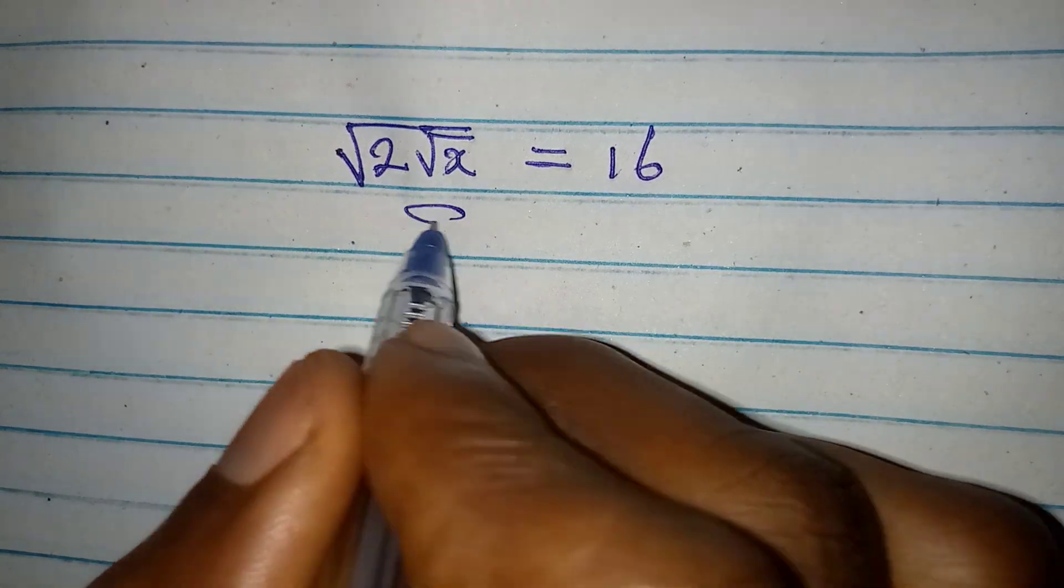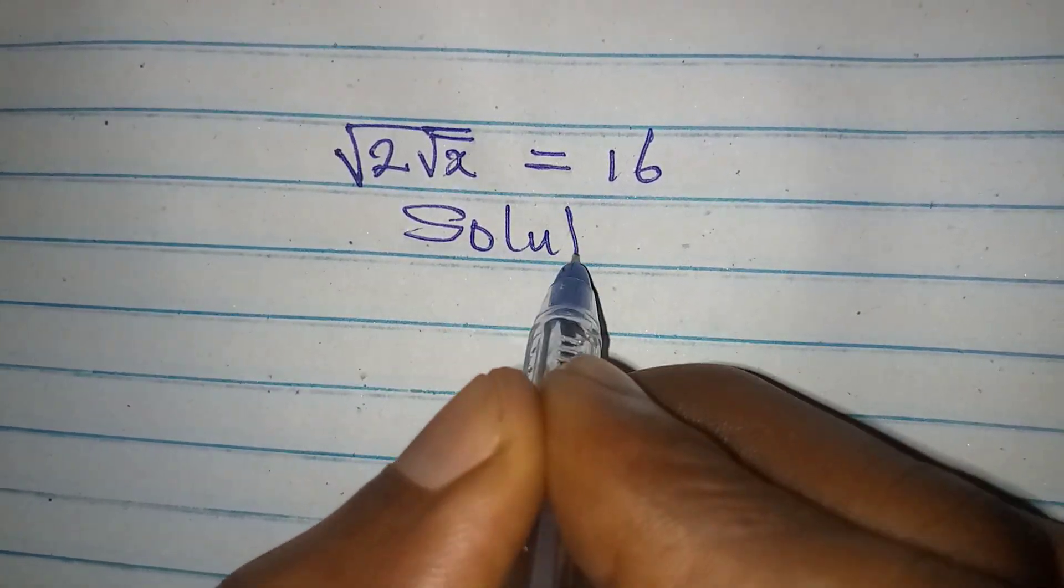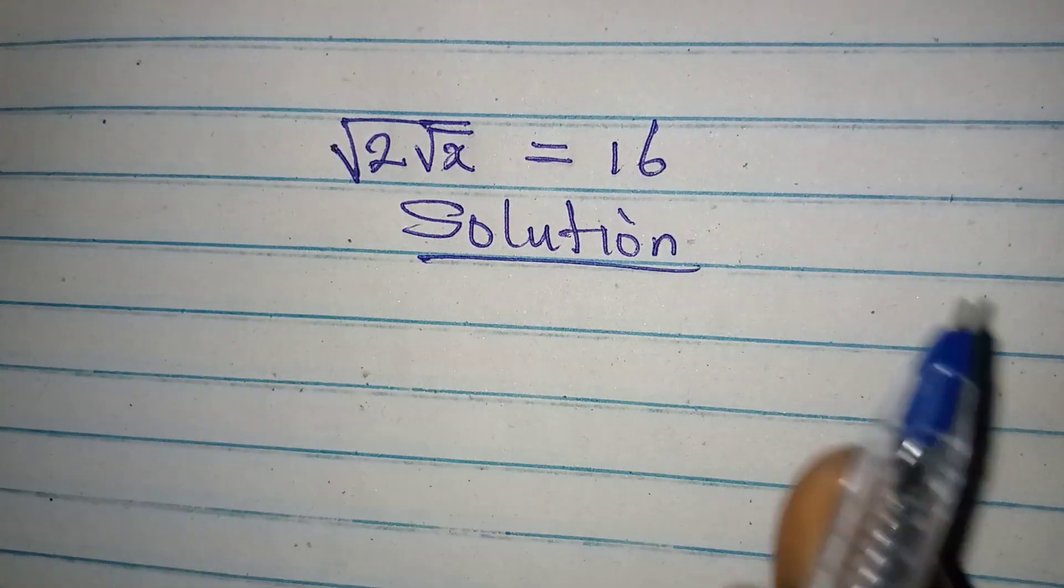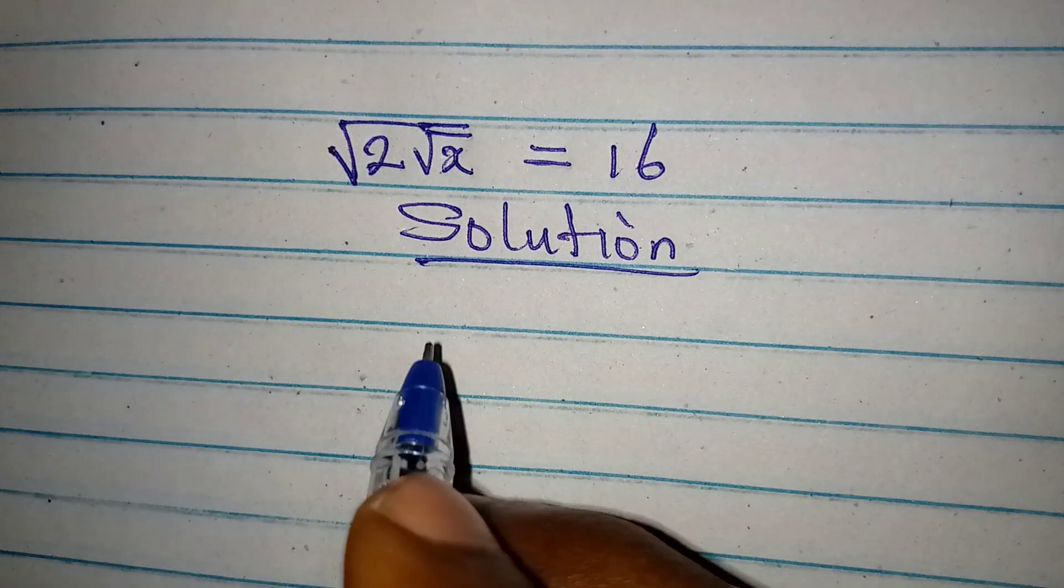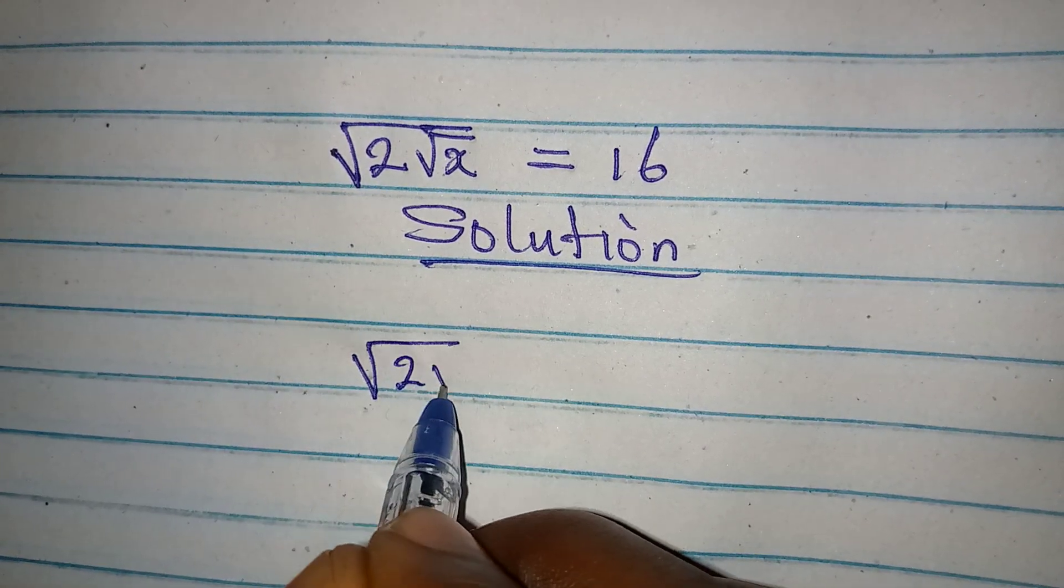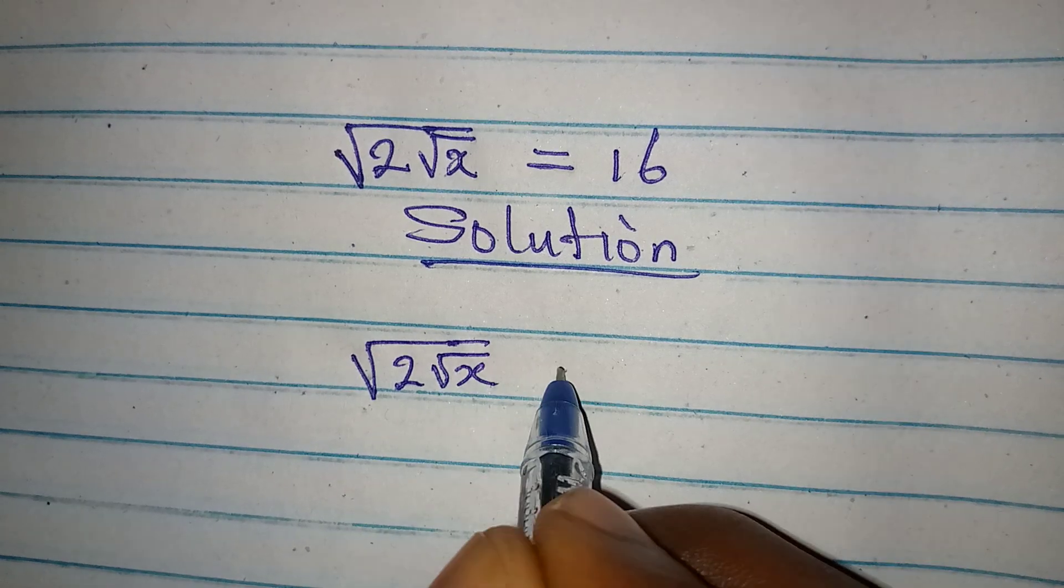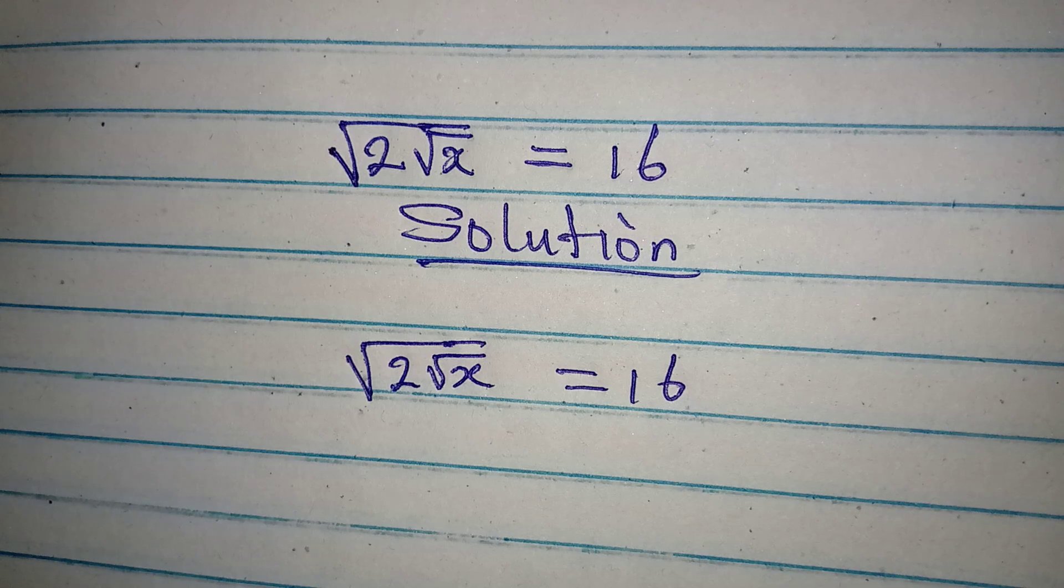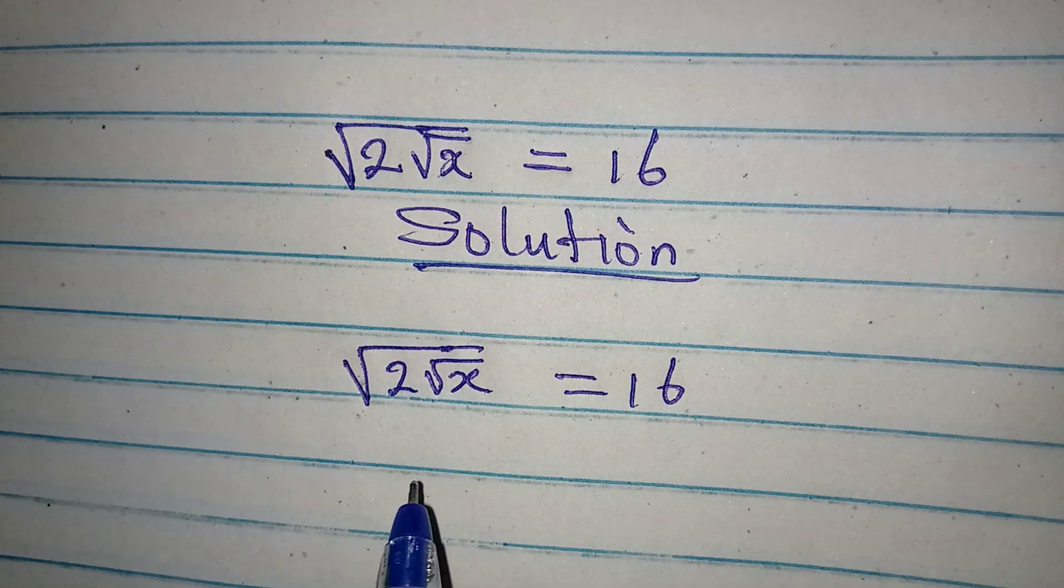Hello everyone, let's provide a solution to this beautiful Olympiad mathematics problem. Square root of 2 square root of X equals 16. Now what do we do? First we have to remove the first square root, and we can only do that by squaring both sides.